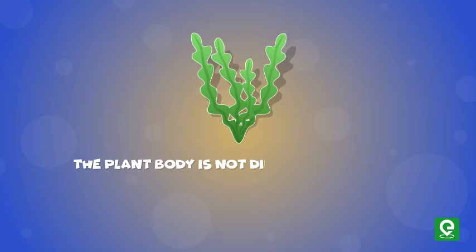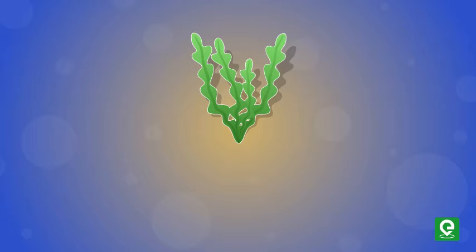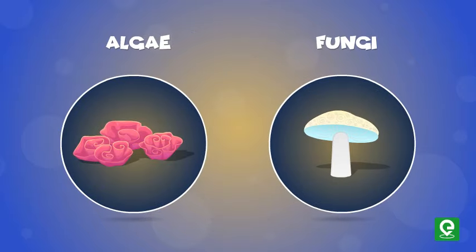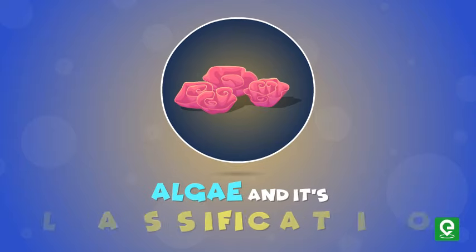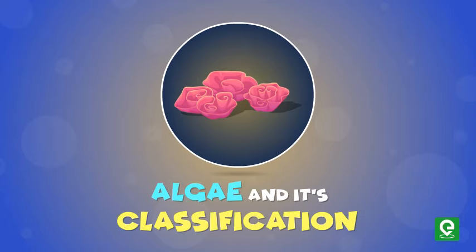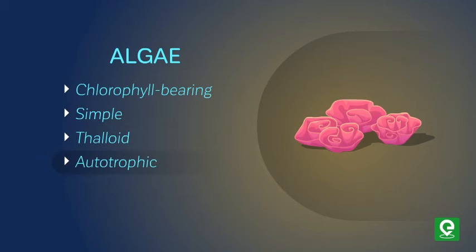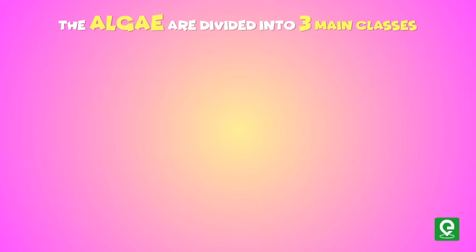Members of division Thallophyta are the most primitive and simple plants. Their plant body is not differentiated into root, stem, and leaves. Thallophyta includes algae and fungi. Let's begin by learning more about algae and its classification.